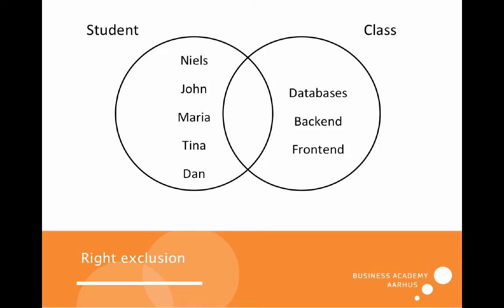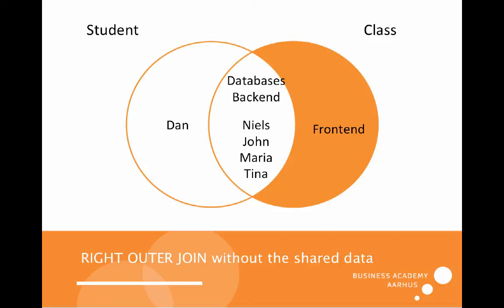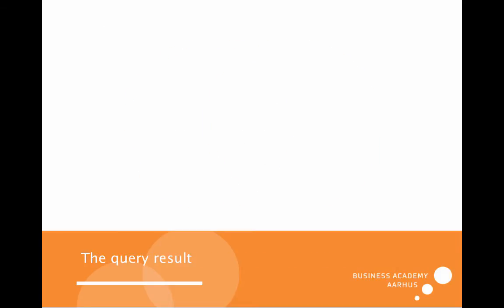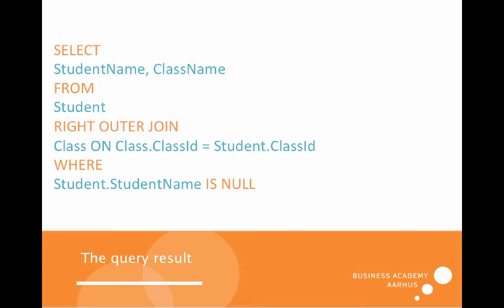So what do we do when we have the right exclusion? I want to know which class is not selected. As we know, frontend is not selected by anyone, so we use a right outer join without the shared data. We do it like before, except we use a right outer join and then we have student name IS NULL.